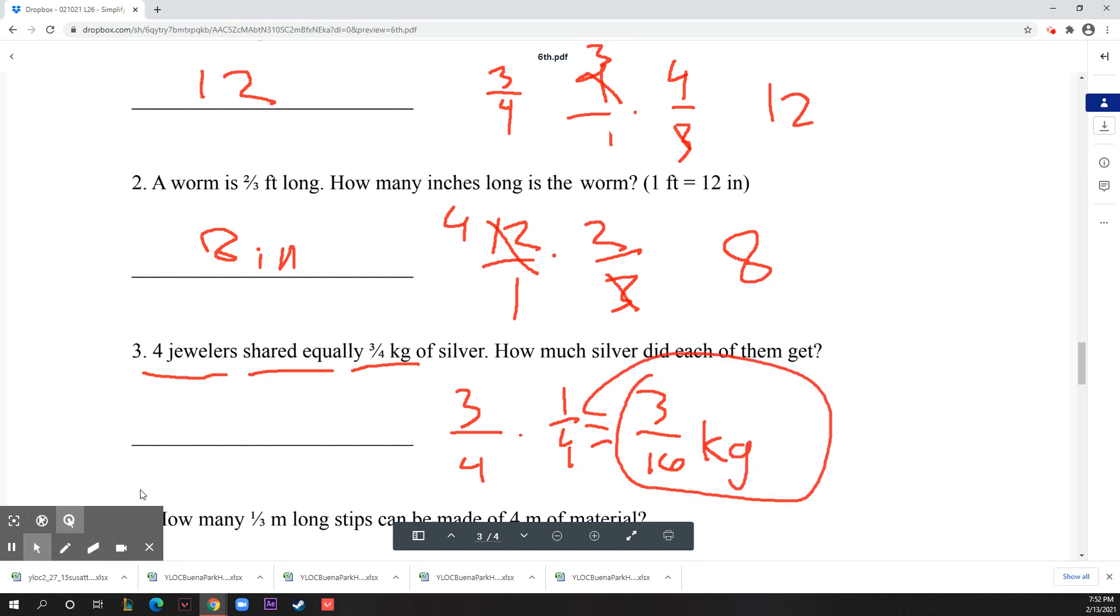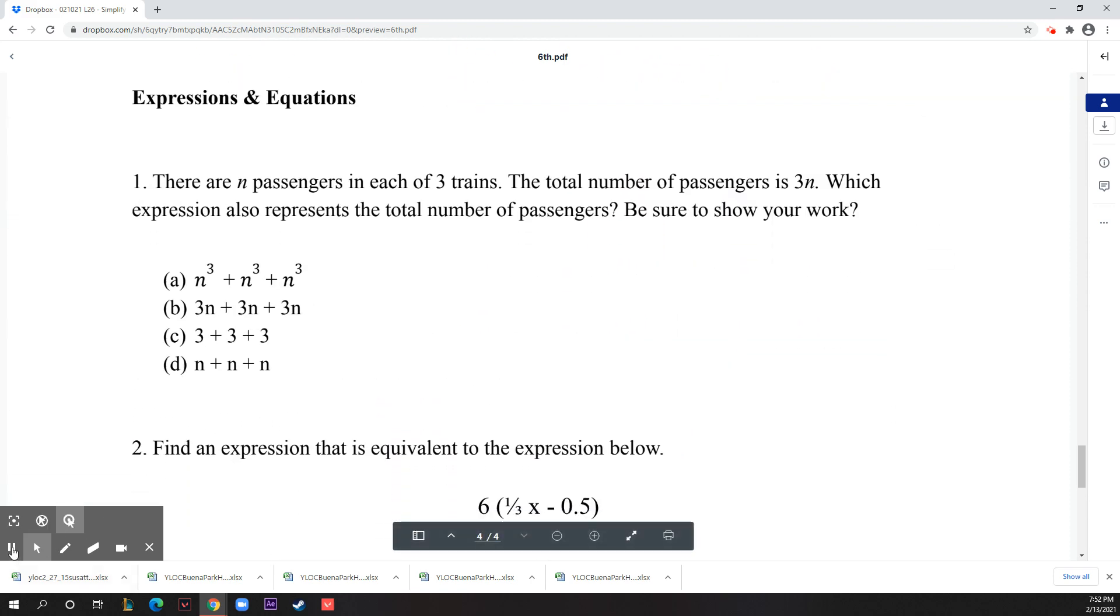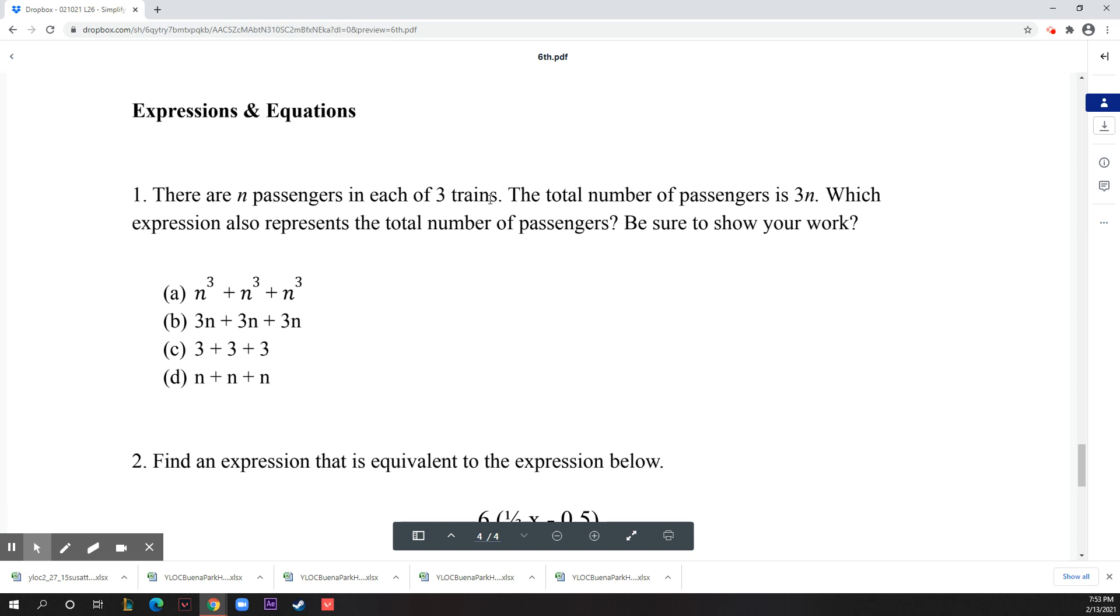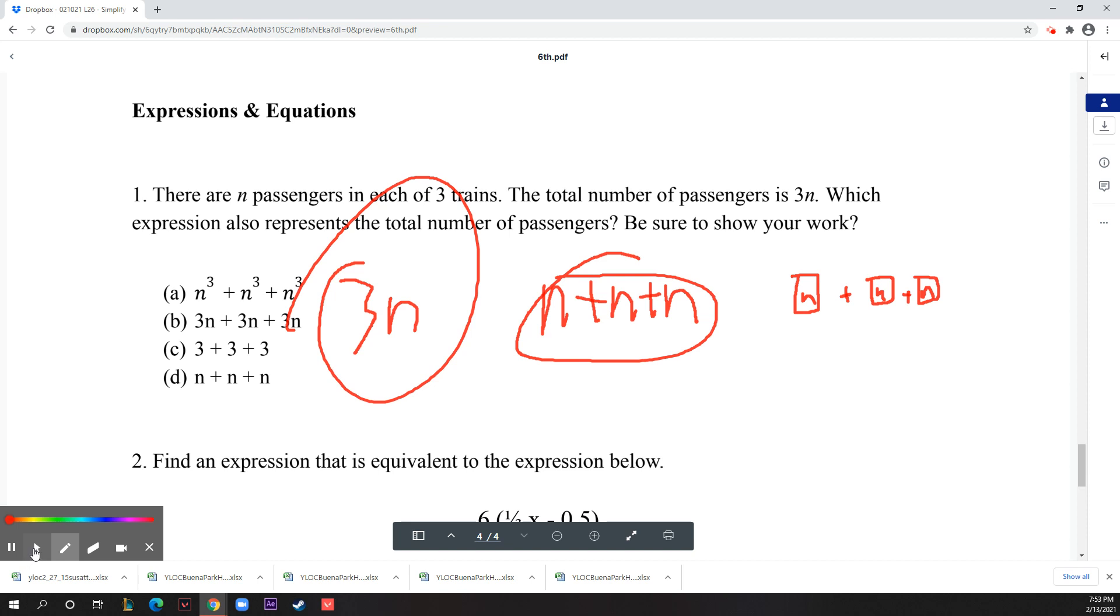On to the next section, which is expressions and equations. There are n passengers in each of three trains. The total number of passengers is 3n. Which expression also represents the total number of passengers? If there are n passengers in one train and there are three trains, that's just three times n. But n is also n plus n plus n - that's just basic math. Or there's one train, two trains, three trains, and if each train has n passengers in it, you just add these together and get n plus n plus n.